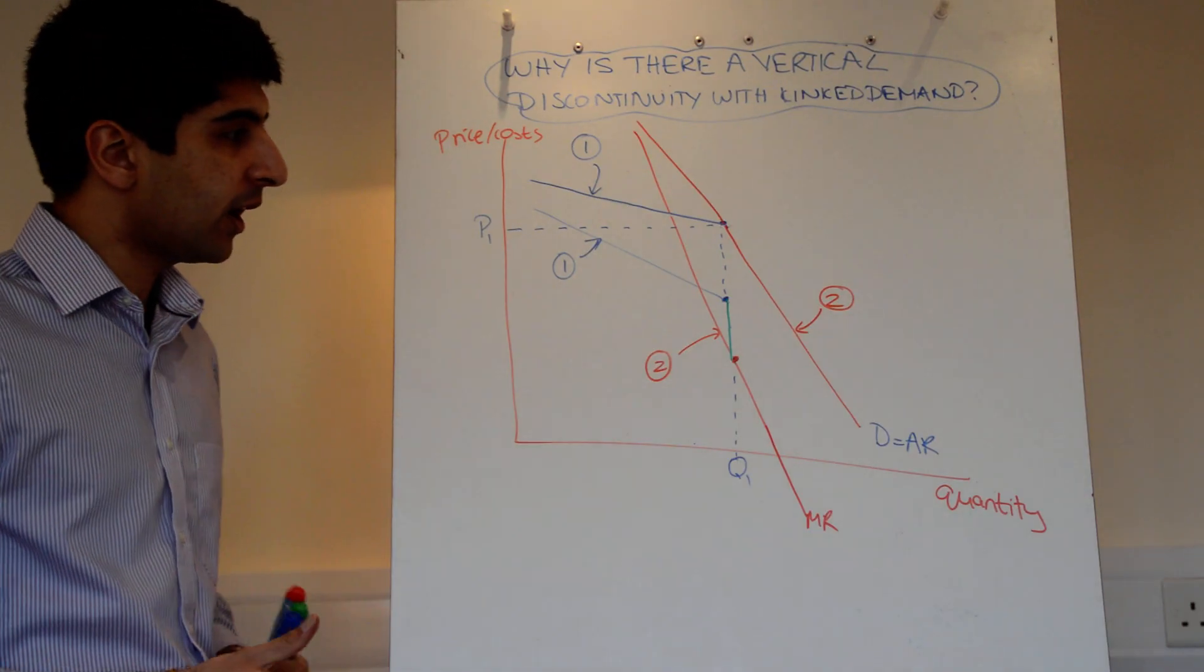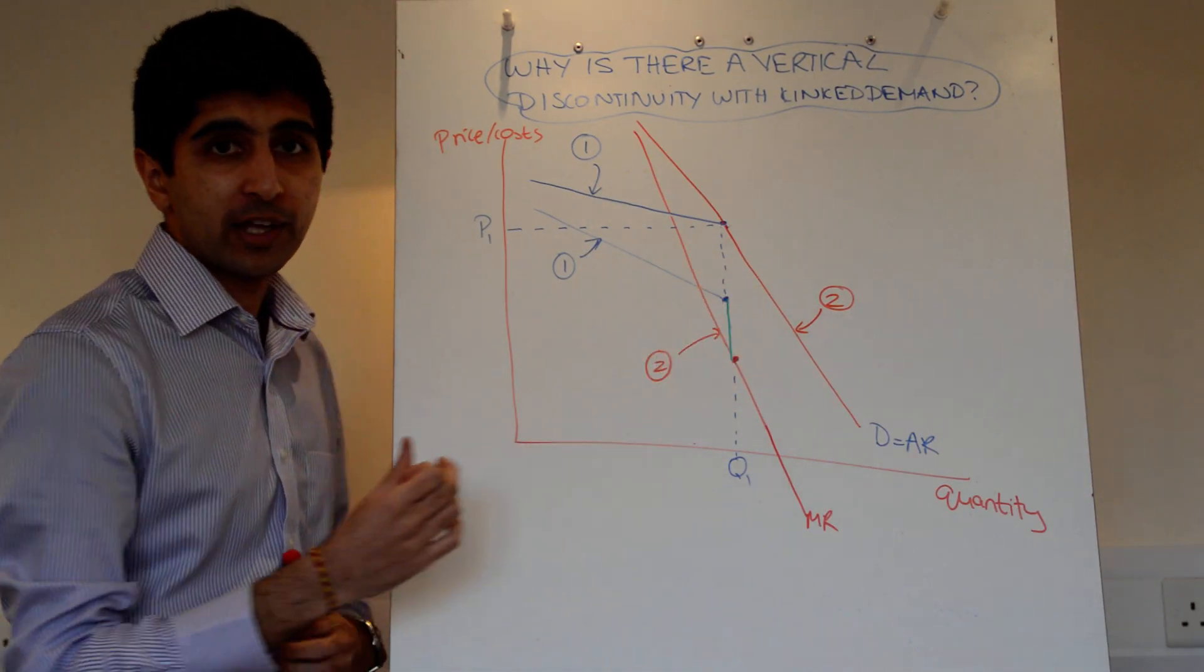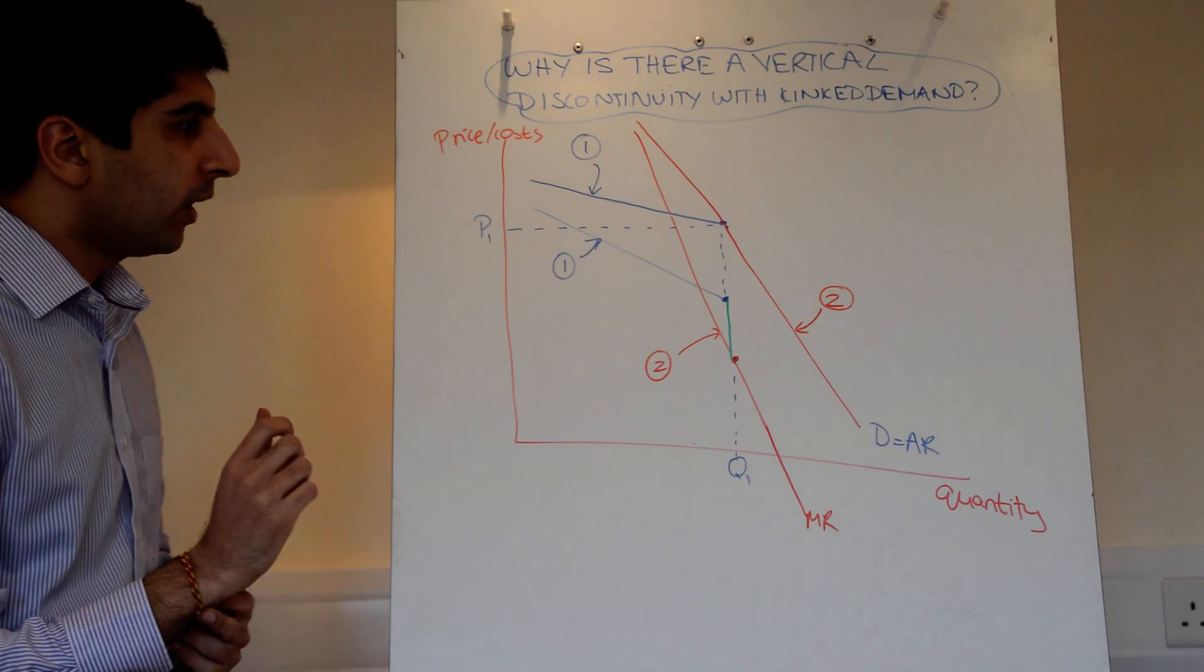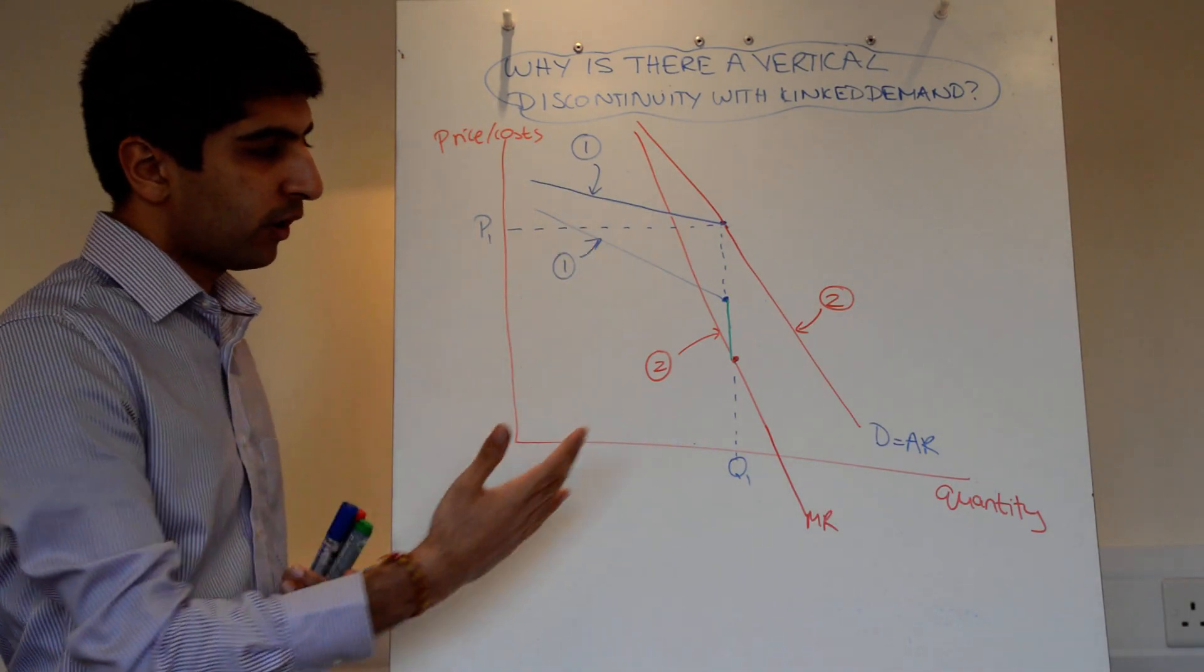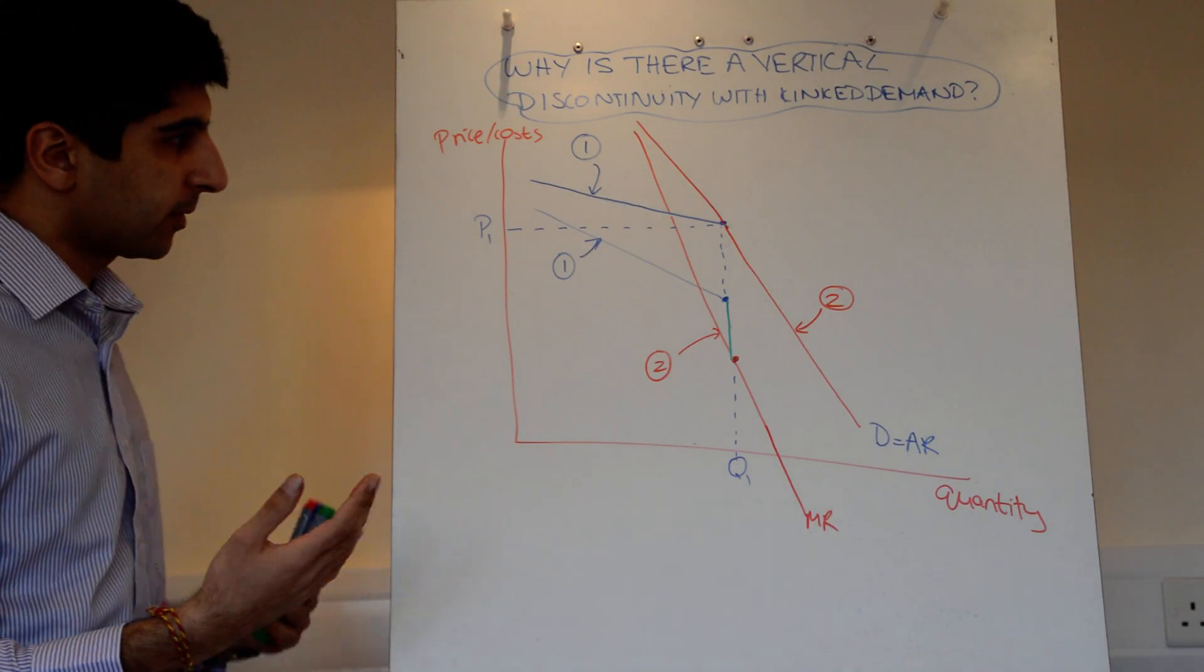So we learnt in the first video that I made that there is a vertical gap, but why does that actually occur? Well, to make this make sense, I've drawn a whole host of lines on here which I'm going to explain.